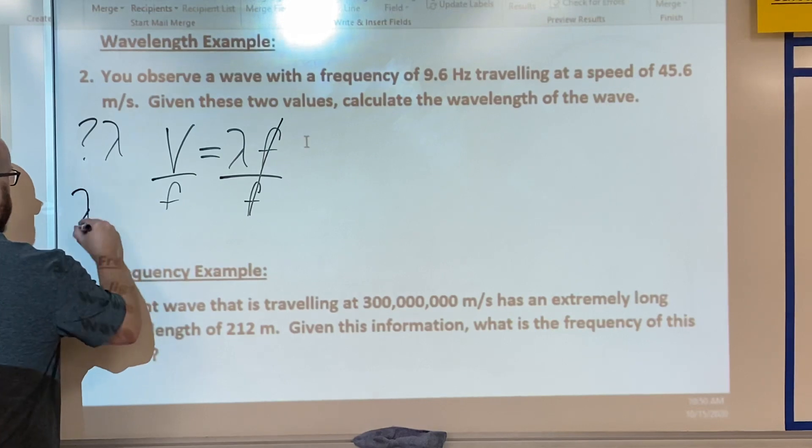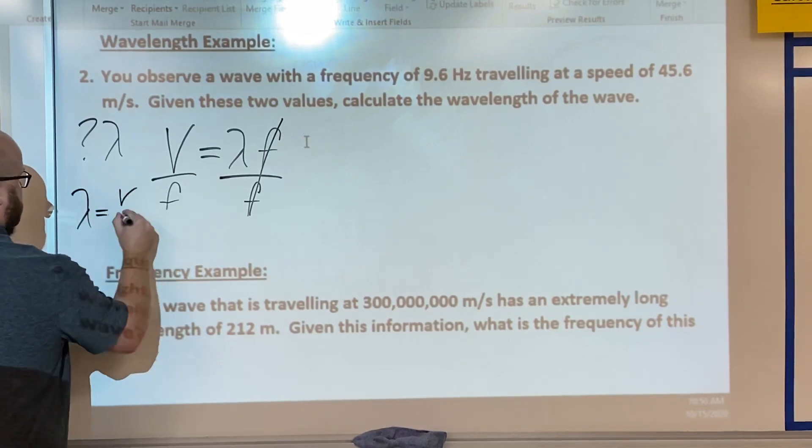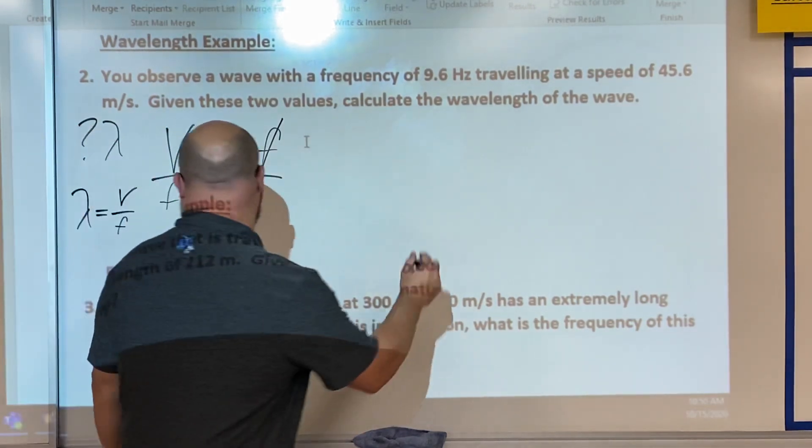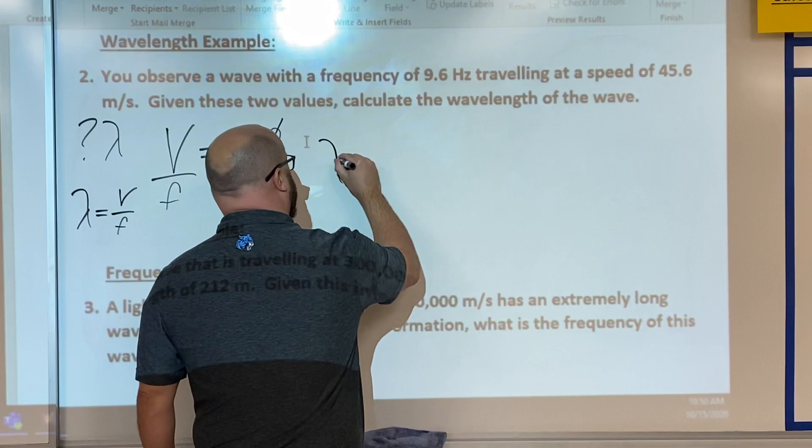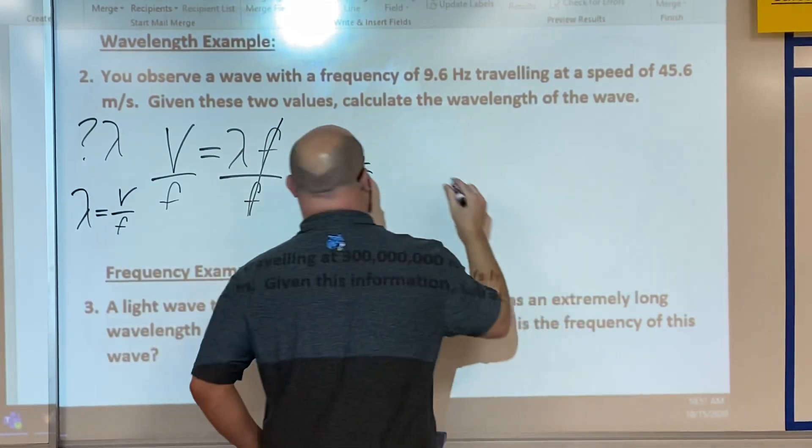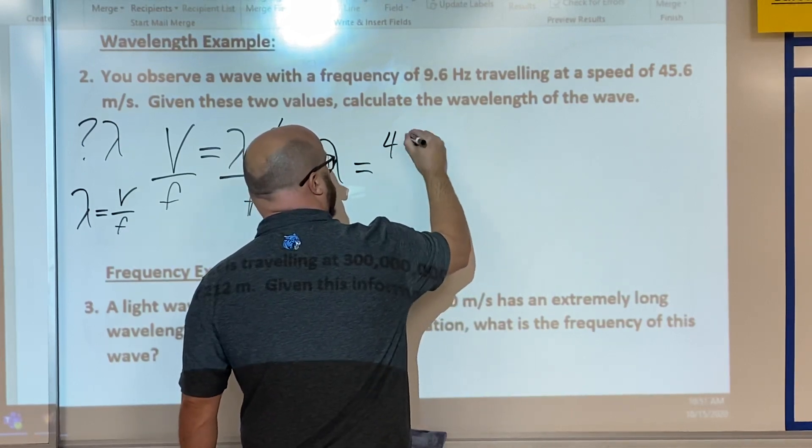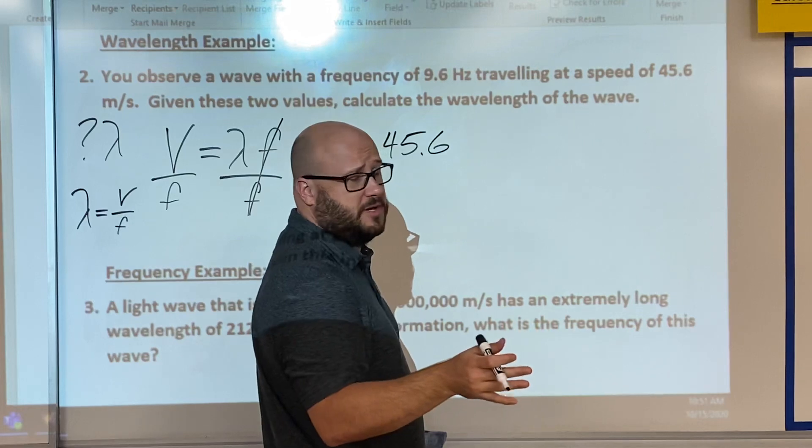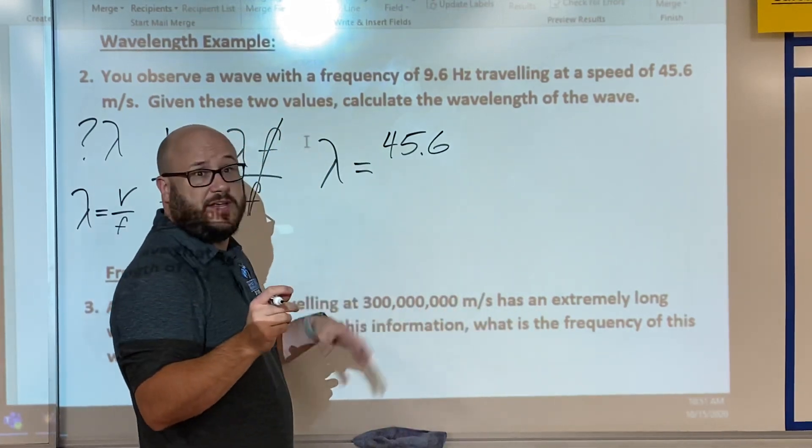Lambda equals velocity over frequency. So now let's just plug those numbers in. Lambda equals our velocity or speed was 45.6, and you can leave the units off at this point as long as you know what three units each of the values is.